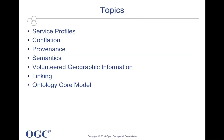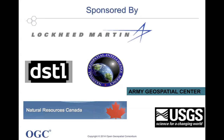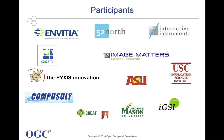Hello everyone. It was a pleasure to lead the cross-community interoperability thread. We covered very interesting topics: service profiles, conflation, provenance, semantics, volunteered geographic information, linking — how do we link different features to other information — and an ontology core model. The sponsors that sponsored this activity were Lockheed Martin, DSTL, NGA, Natural Resources Canada, Army Geospatial Center, and USGS. We also had various participants that provided the services, the clients, the reports, and the architecture.